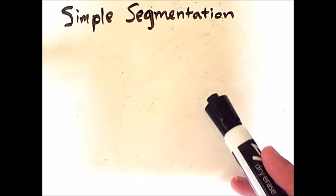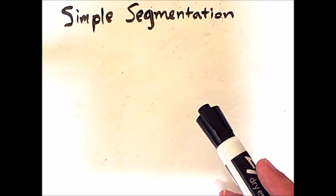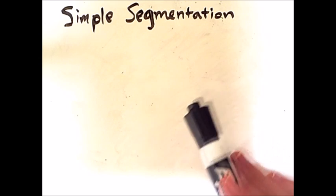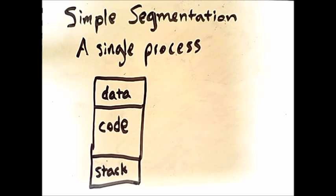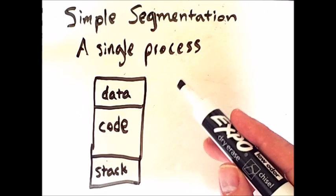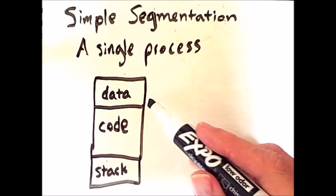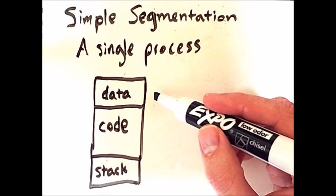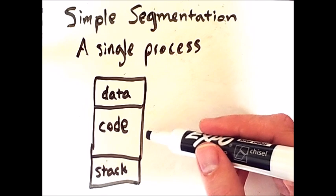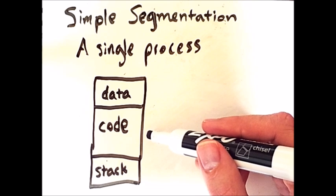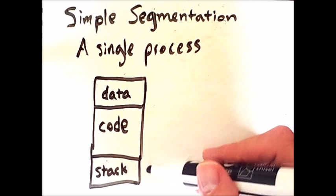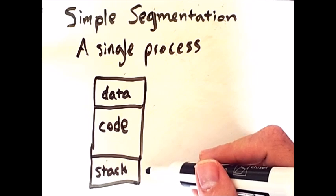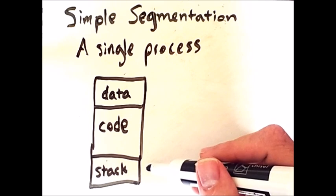Segmentation is really just a variant of dynamic partitioning where an individual process is broken into segments. A single process is usually split into at least three segments: one for data — all the variables used in the program — one for code, which is the portion of the process that is actually executed on the processor, and then the stack, which dynamically tracks the progress of the code for, for example, procedure calls.